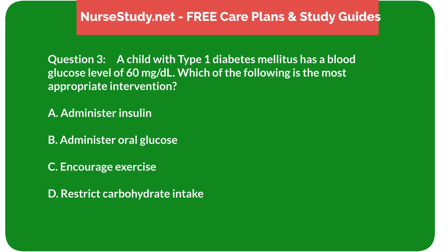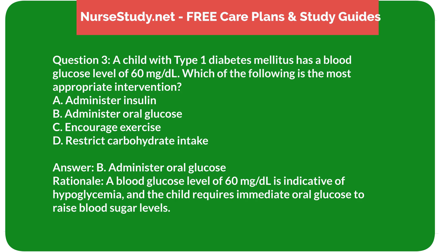Question 3: A child with type 1 diabetes mellitus has a blood glucose level of 60 mg/dL. Which of the following is the most appropriate intervention? A) administer insulin, B) administer oral glucose, C) encourage exercise, D) restrict carbohydrate intake. Answer: B) administer oral glucose. Rationale: A blood glucose level of 60 mg/dL is indicative of hypoglycemia, and the child requires immediate oral glucose to raise blood sugar levels.